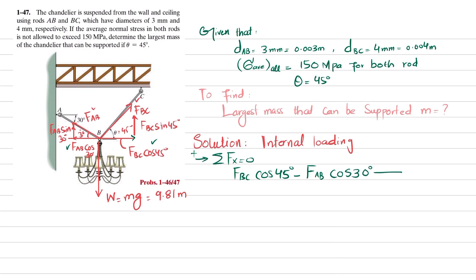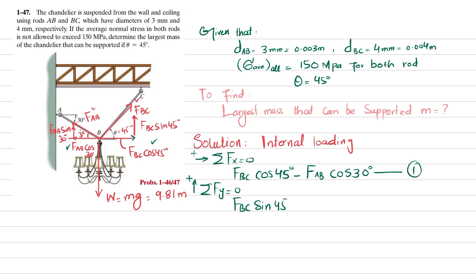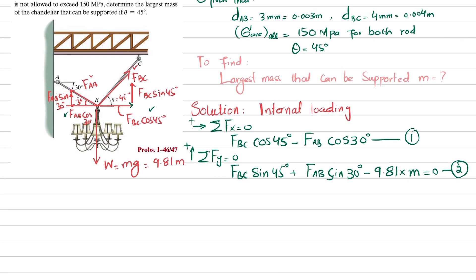The second equilibrium condition: the sum of all forces along the y-direction equals zero. Taking upward as positive, the three forces are: F_BC·sin(45°) plus F_AB·sin(30°) minus 9.81·m equals zero. This is equation number two.